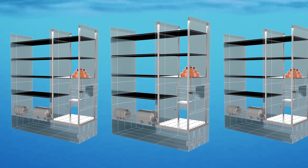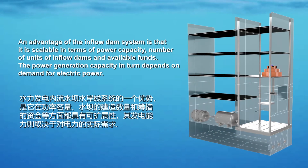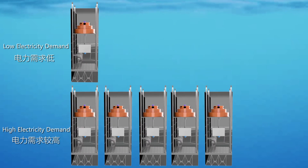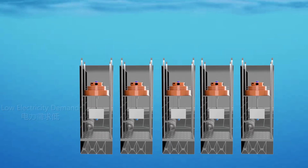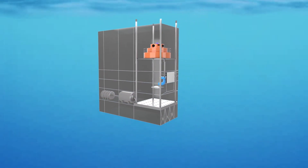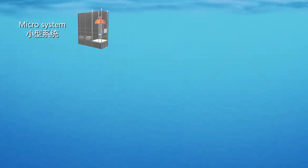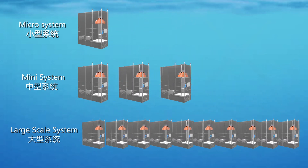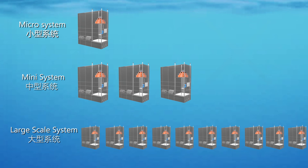An advantage of the inflow dam system is that it is scalable in terms of power capacity, number of units of inflow dams, and available funds. The power generation capacity depends on demand for electric power — when there is high demand, more inflow dams can be added after initial installations. Some inflow dams can be closed by regulating the intake sleeves for preventive maintenance or when demand is low. It is also possible to implement the system from a microsystem of a few kilowatts, a midi system of a few hundred kilowatts, to a large-scale system of several megawatt capacities, which conventional hydroelectric dam systems cannot match.